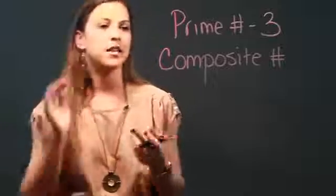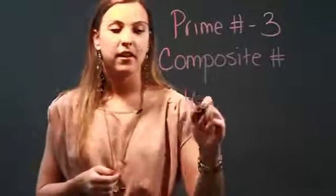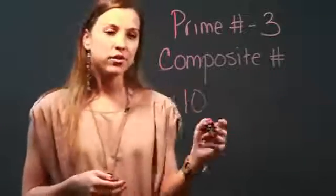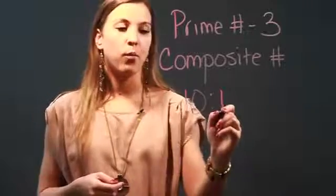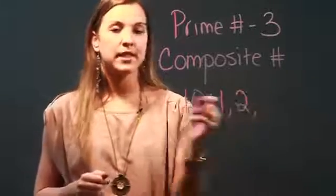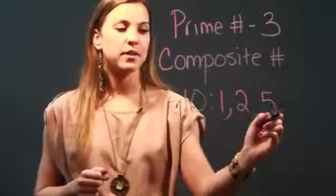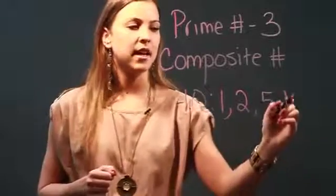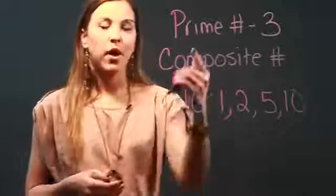An example of a composite number would be ten, because if I list all the factors of ten I get: one goes into ten, two goes into ten, five goes into ten, and ten goes into ten.